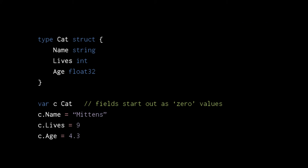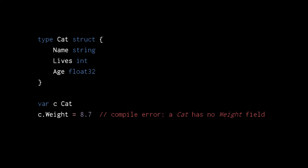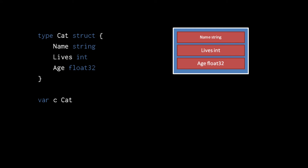Having defined this struct type, we can create variables of type cat. We then access the individual fields with a dot operator, much like we do with object properties in JavaScript. Be clear, however, that unlike JavaScript objects, structs in Go have a fixed set of fields. We can't assign to a weight field of our cat because cat values have no such field. In memory, a cat value directly contains all of its fields, so in a sense our cat variable is a variable containing other variables.